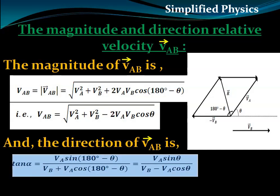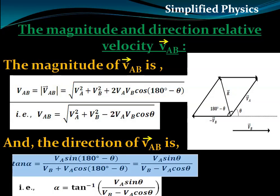The direction is given by tan alpha equals V_A·sin theta divided by (V_B minus V_A·cos theta), where alpha is the angle made by vector V_B with the relative velocity R. Therefore, alpha equals tan inverse of (V_A·sin theta divided by V_B minus V_A·cos theta). In this way we determine the magnitude and direction of the relative velocity of A with respect to B.